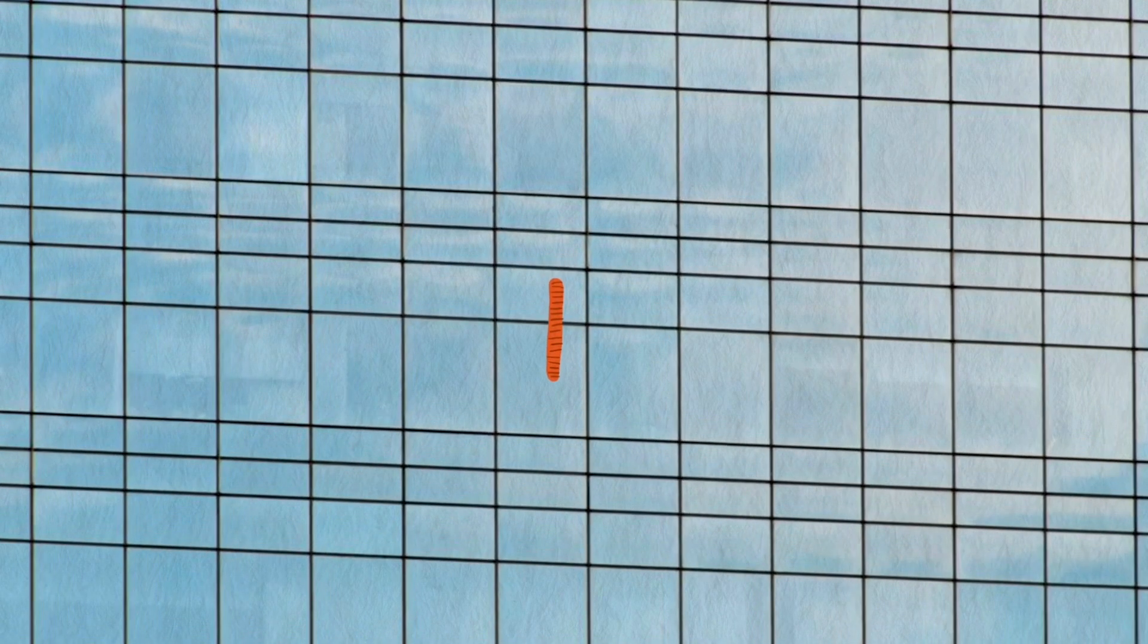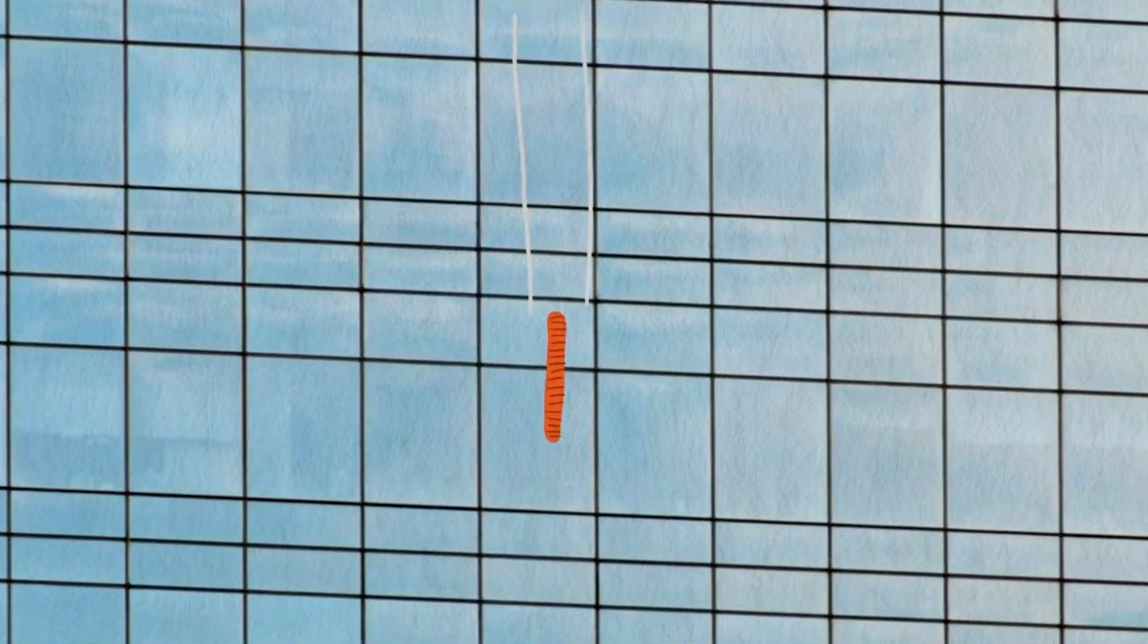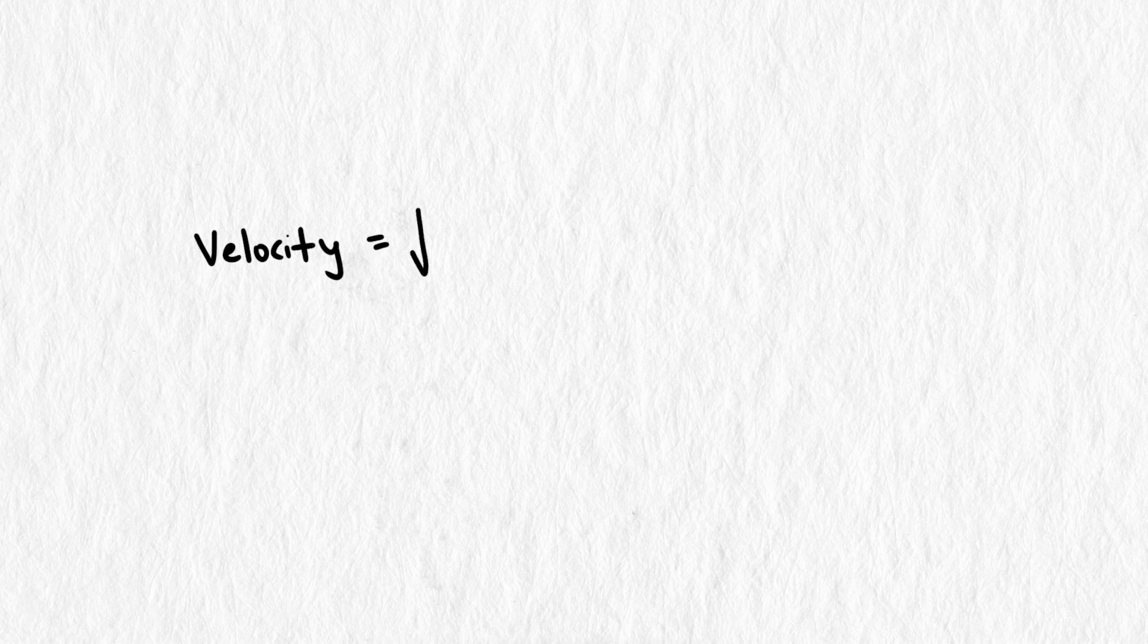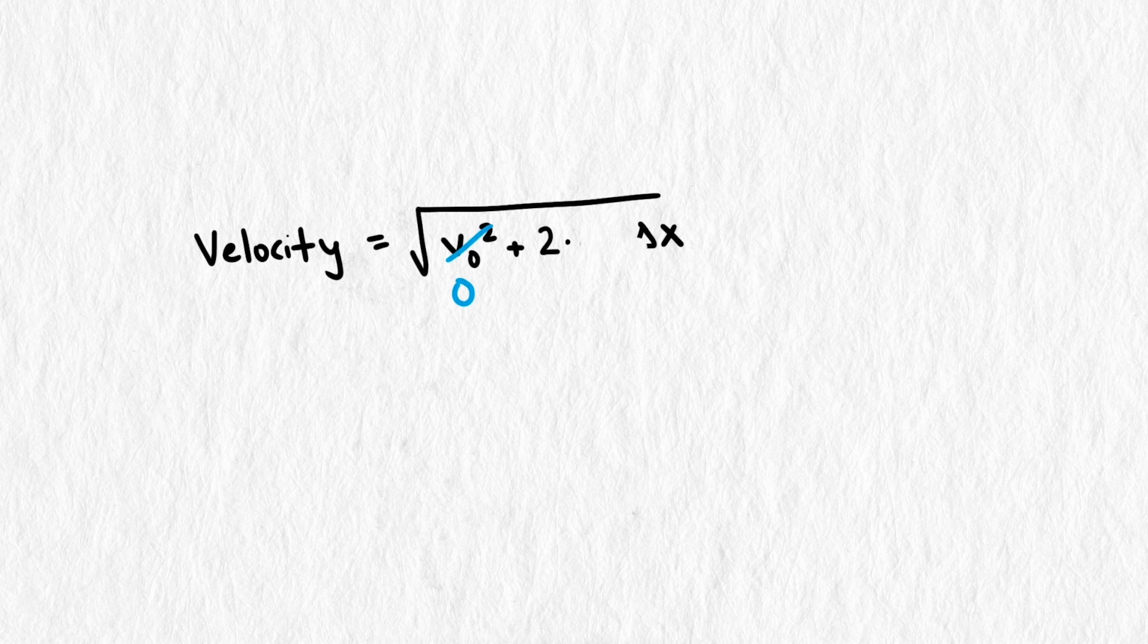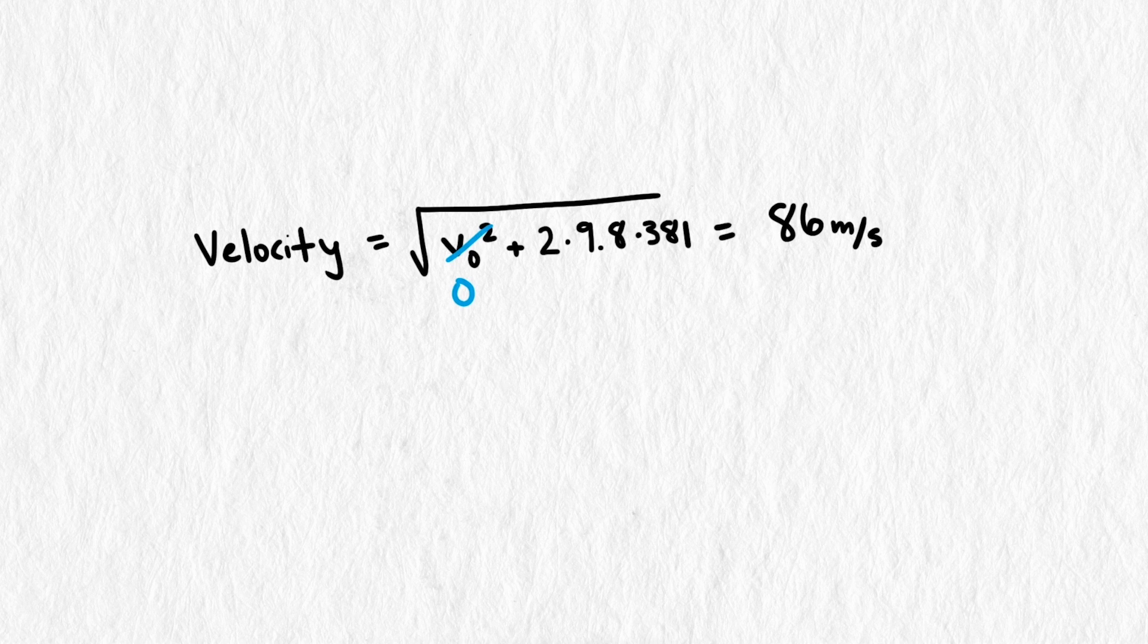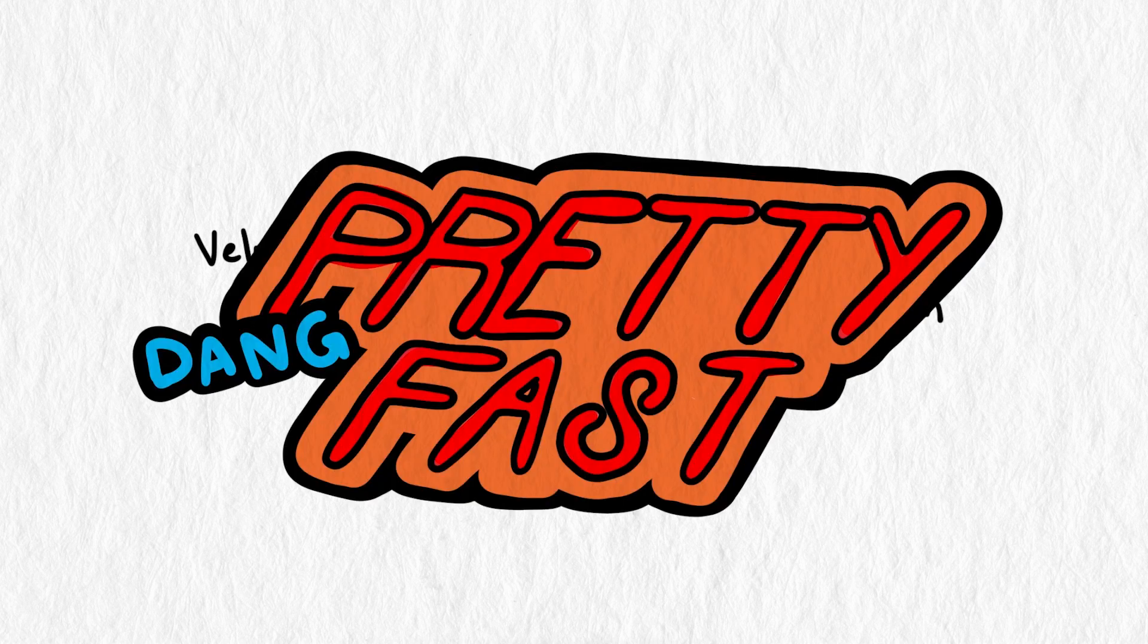What if our penny was falling in a vacuum? Without air resistance, it could reach even greater speeds. Without air resistance, our velocity equation becomes much simpler. Velocity is the square root of the initial velocity squared, which is 0 in this case, plus 2 times gravity times displacement. Gravity is 9.8 meters per second squared, and displacement is the height of our penny that's being dropped from, so 381 meters. That gives us a velocity of 86 meters per second, which is almost 200 miles an hour. Pretty dang fast.